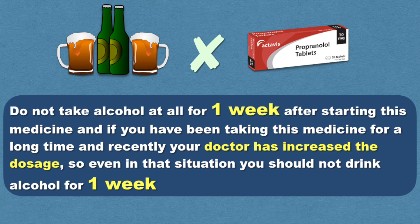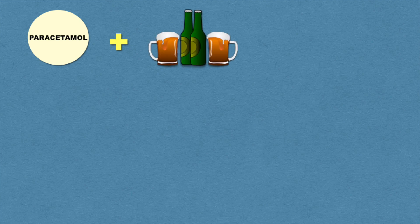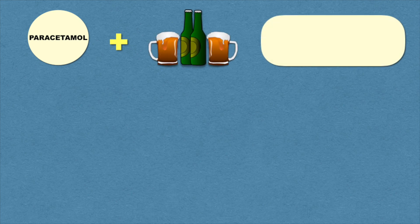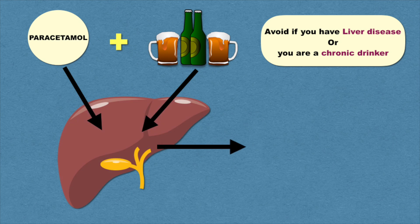Now let's talk about one of the most commonly used medicines, paracetamol. Drinking a small amount of alcohol while taking paracetamol or ibuprofen is usually safe, but it should be used with caution if you have certain health conditions such as a liver problem or if you are a chronic drinker. As both alcohol and paracetamol are processed by the liver, the combination can be dangerous and harmful.